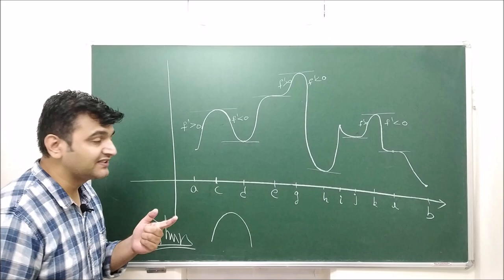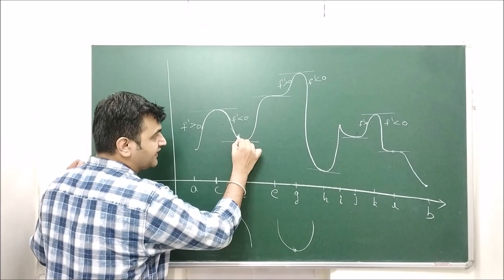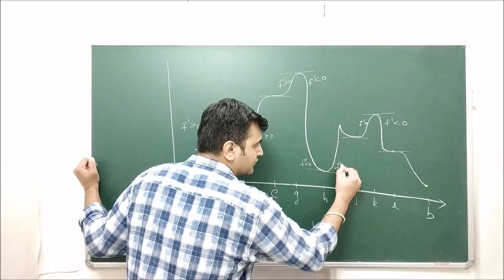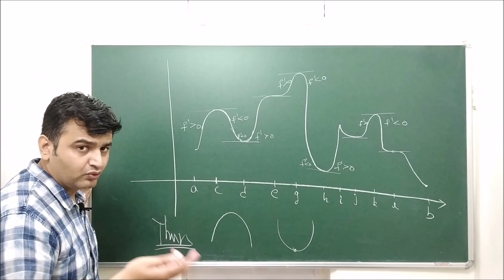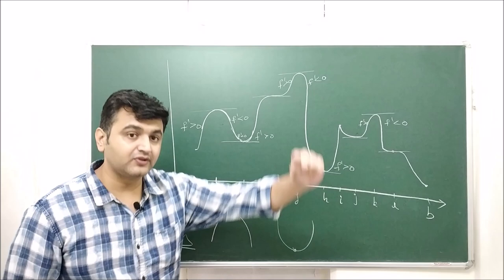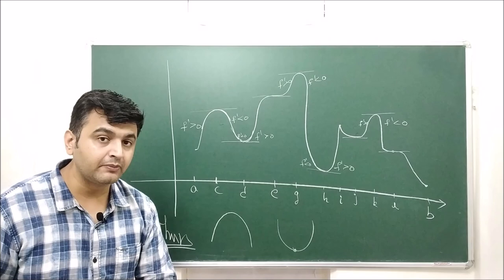Now for minima: when will you get a minimum? The function should first decrease and then increase. That means f′ is negative before the point and positive after. Here, on the left side the sign of the derivative is negative and on the right side it is positive. The second statement is: if f′ changes sign from negative to positive at a critical point, you have a local minimum value at that point. You can see local minima at points D and H.